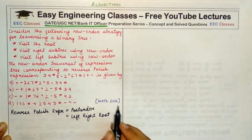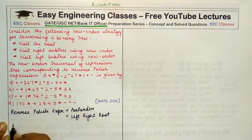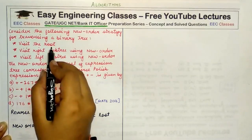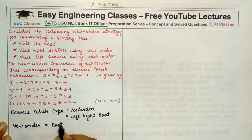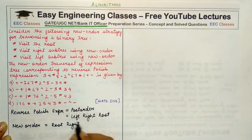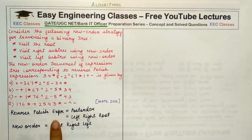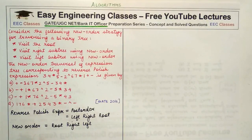The new order strategy says to traverse in the following order: first visit the root, then visit the right subtree, then visit the left subtree. If you notice carefully, reverse polish expression or post order traversal is just the opposite of the new order — post order is left-right-root, whereas new order is root-right-left.